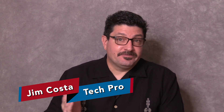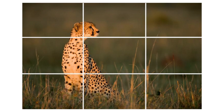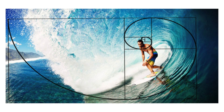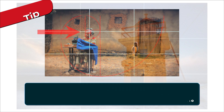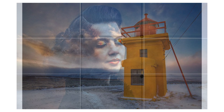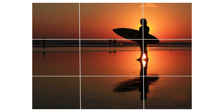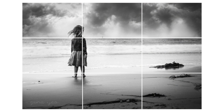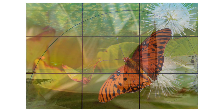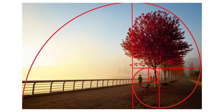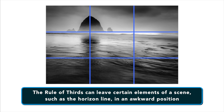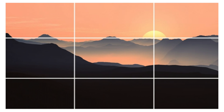So why not just use the Rule of Thirds? The most common design principle applied in photography, video production or filmmaking is the Rule of Thirds, and it is thought to be a manifestation of the Golden Ratio in photography. Essentially, the Rule of Thirds was designed as a simple way for photographers to locate the sweet spot — the point at which the human eye is first drawn — of the Golden Ratio. While the Rule of Thirds works well for many situations, the Golden Ratio can often be more pleasing, primarily because it allows for a more balanced image. Oftentimes, the Rule of Thirds can leave certain elements, such as the horizon line, in an awkward position, where the simple division into thirds can look a little too obvious.